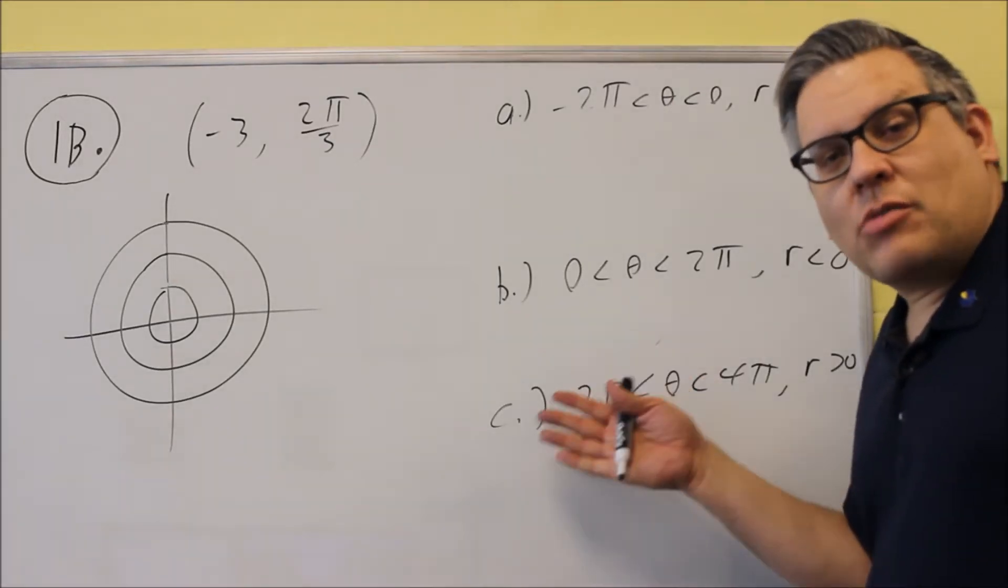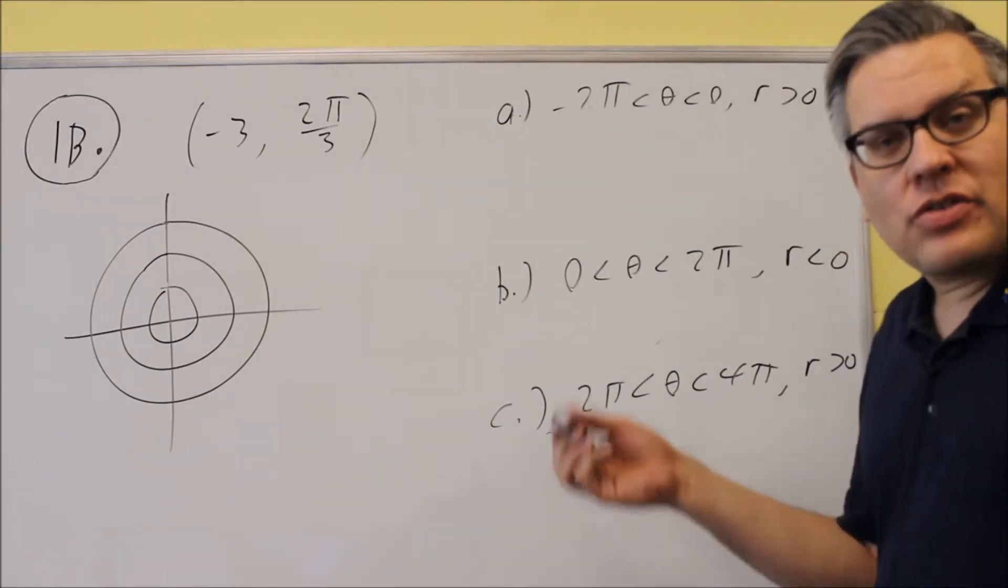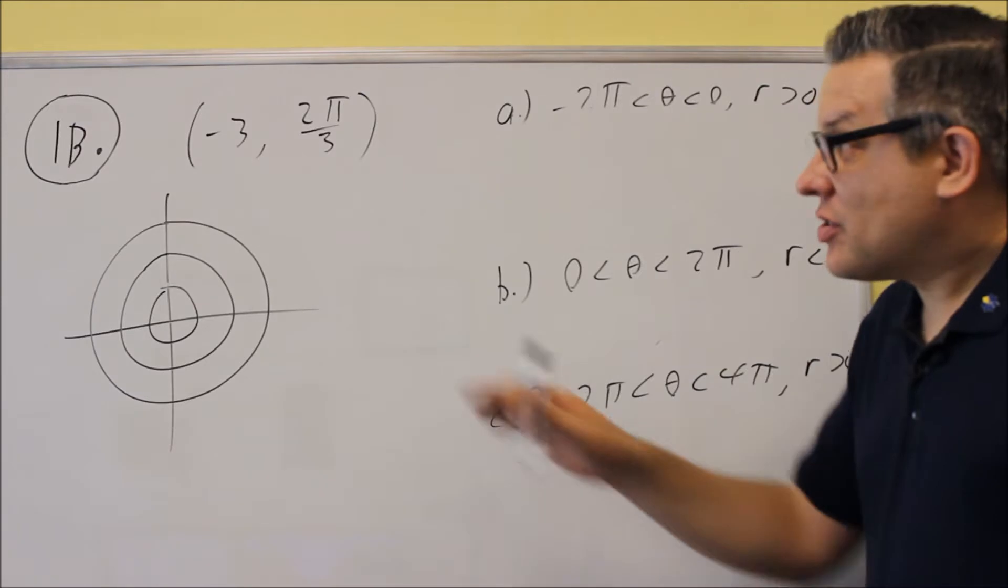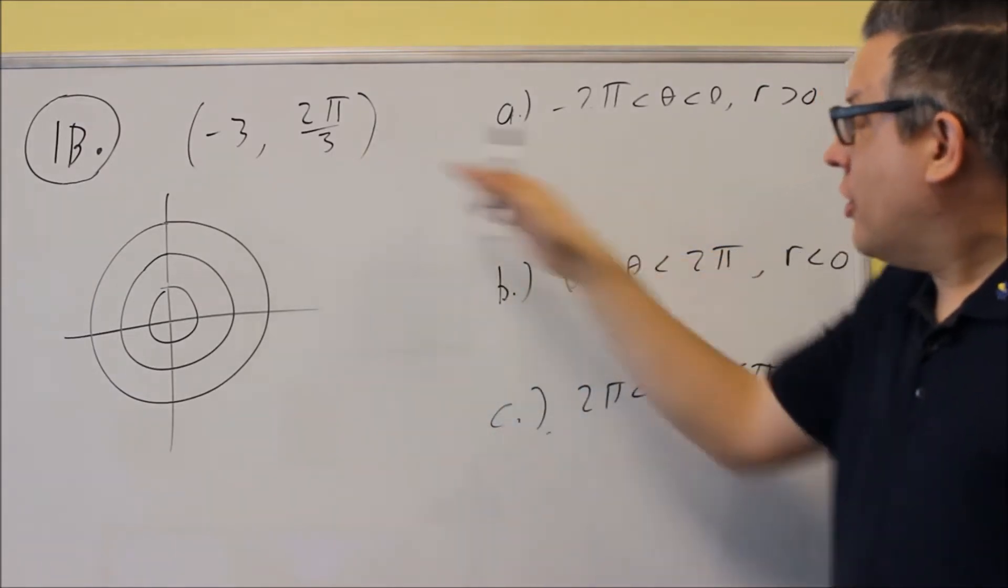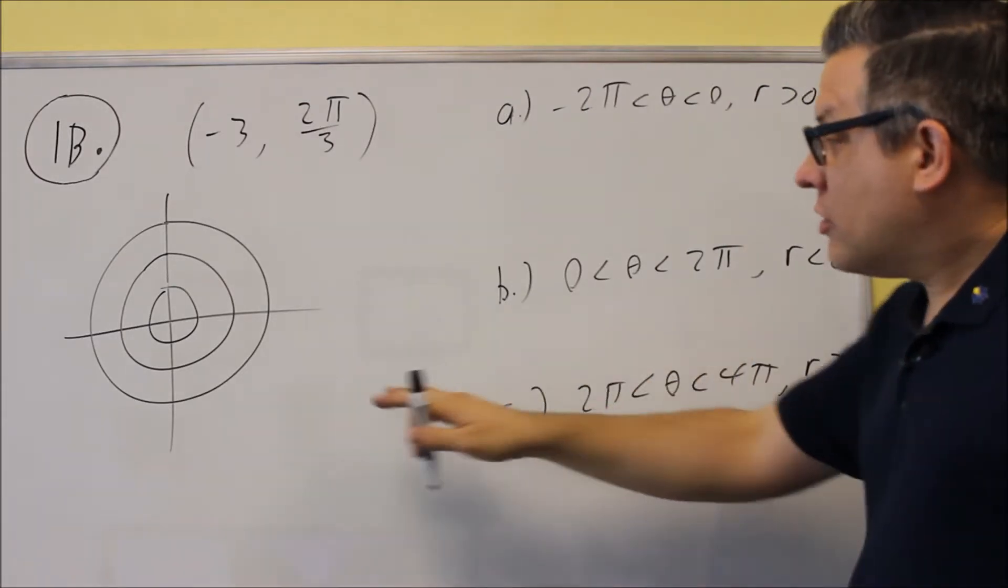For 1B, we're going to do this exactly the same as 1A. The only difference now is we're working with radians instead of degrees. So what you'll notice on the sample test is if it's given as radians, we have these conditional statements here are expressed all in terms of radians.